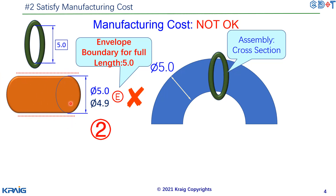However, there is still an issue. From a functional point of view, all we really need to control is the diameter of each cross-section — we do not need to control the full length. For example, a pin that is slightly bent but within diameter at every cross-section may be acceptable. The envelope requirement is therefore over-constraining — it is too strict from a manufacturing cost perspective.